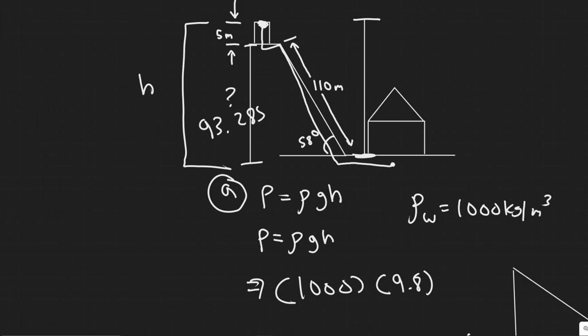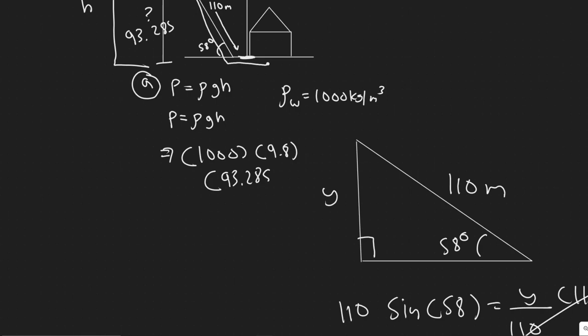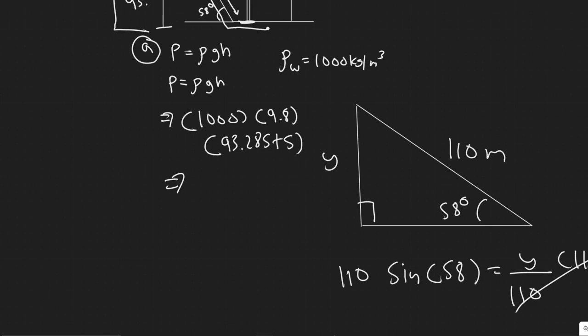And so now we know that this distance right here is 93.285. So our h, which is this total distance, would be this plus the five. We have to add both. So we would just plug it in there, so 93.285 plus five, and that's your h.